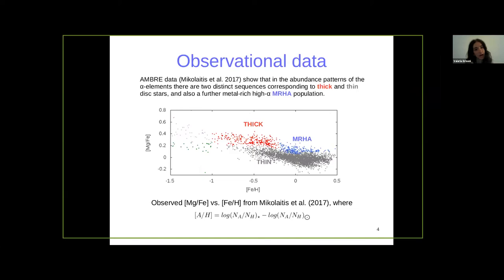The observational data from which I have started are the APOGEE data, which show that in the abundance patterns of the alpha elements such as magnesium, there are two distinct sequences corresponding to thick and thin disk stars, and also for the metal-rich high-alpha population. Here I show the observed magnesium over iron versus [Fe/H] from APOGEE, color-coded in red for thick disk stars and gray for thin disk stars. We can see that the thick disk is generally alpha-enhanced, meaning it should form faster on a shorter timescale of formation with respect to the thin disk. We can also see another population color-coded in blue: the metal-rich high-alpha stars, which still need to be well understood by chemical evolution models.